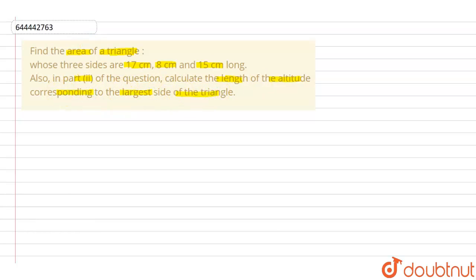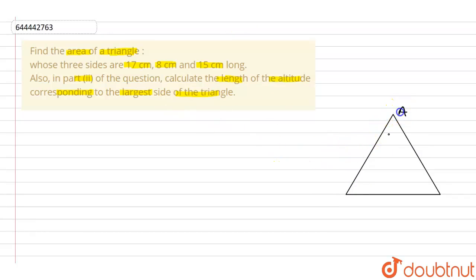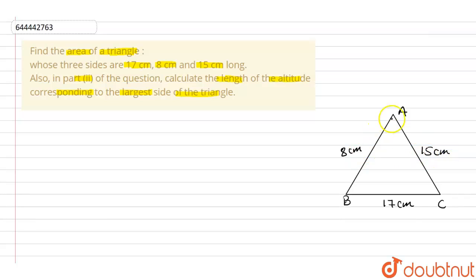So let us first make up the triangle with these three sides. Let us suppose this is our triangle, where this is A, this is B and this is C. Let us suppose BC is given as 17 cm, AB is given as 8 cm and AC is given as 15 cm. That means among the three of them, the longest side is our base, that is BC.